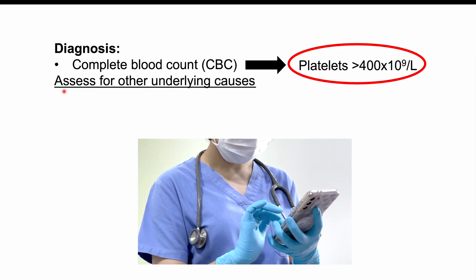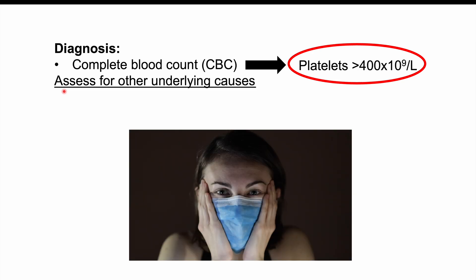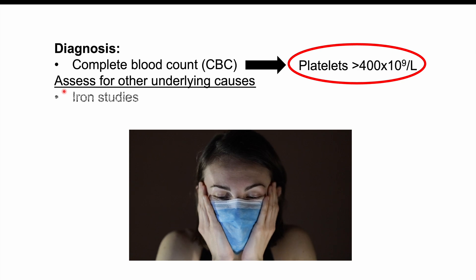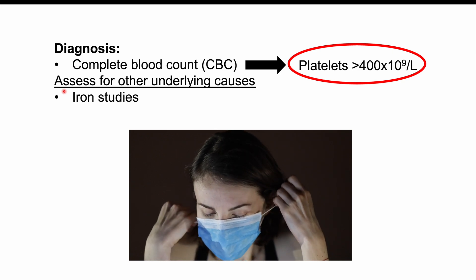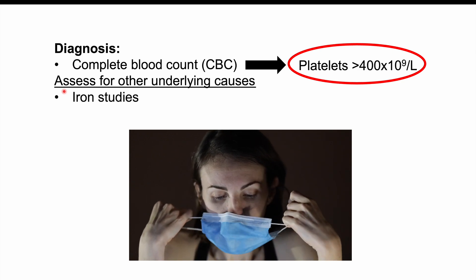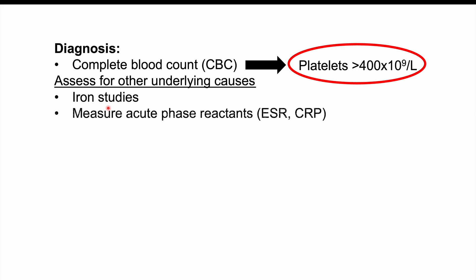Because thrombocytosis is itself often a sign of another condition, it's important to assess for other underlying causes. Along with that blood work, we may find some findings on the CBC. It's also important to do iron studies to look for iron deficiency anemia, which can be a very important and common cause of an increased level of platelets.